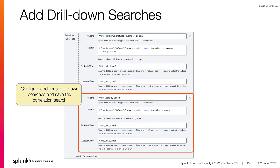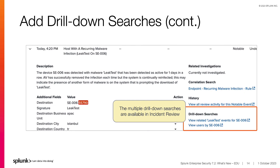Configure the new drill-down, including a name for the drill-down, the search, and the earliest and latest offsets. Select plus add drill-down search to add another search. Be sure to save the correlation search when finished. The multiple searches are available under the drill-down searches in the notable event details.